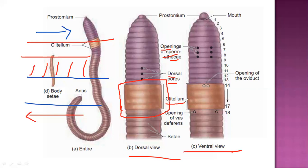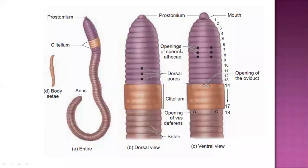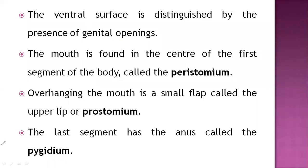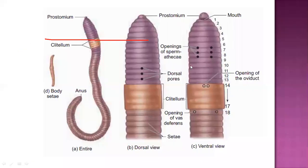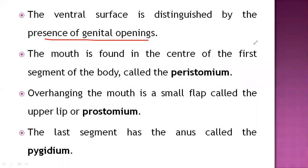In the clitellum region there is an opening called the opening of the oviduct. There is also the opening of the spermathecae and the opening of the vas deferens. These are the setae. The ventral surface is distinguished by the presence of genital openings — that is the spermathecae, oviduct, and vas deferens — which we call ventral genital openings.